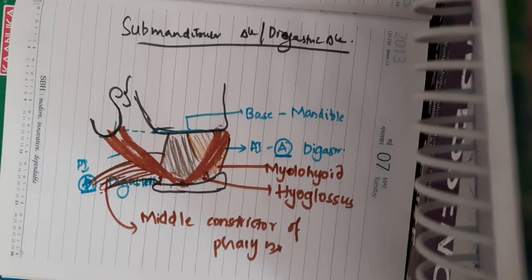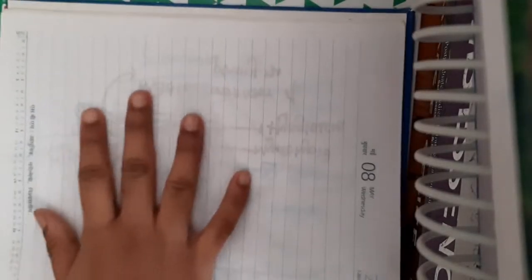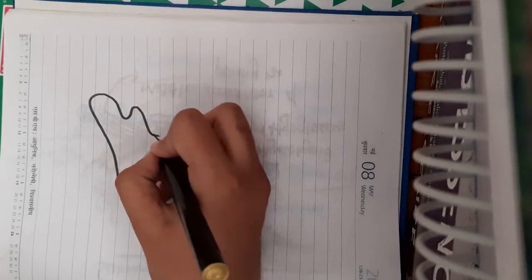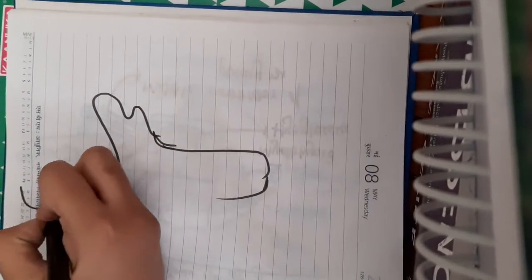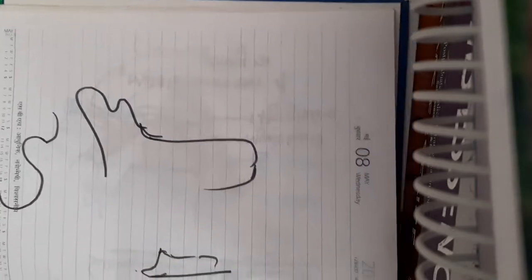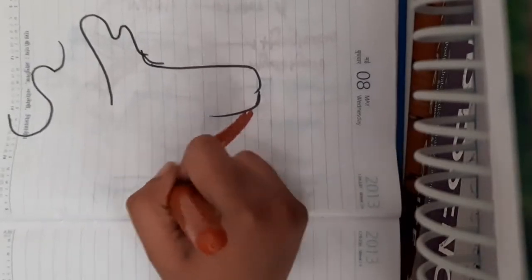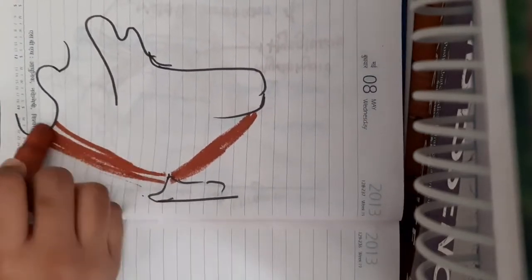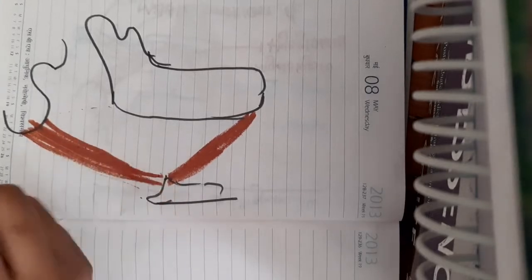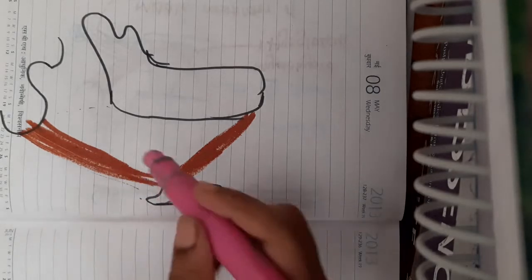The digastric triangle is the most common site for swelling involving the submandibular gland, because the submandibular gland is situated in this triangle. Now let me draw the contents of the digastric triangle. The anterior inferior boundary is the anterior belly of the digastric, the posterior boundary is the posterior belly of the digastric, and the base is formed by the angle of the mandible and the imaginary line joining it to the mastoid process.